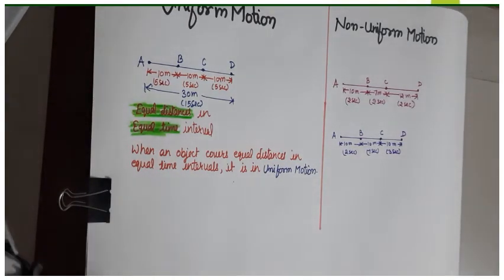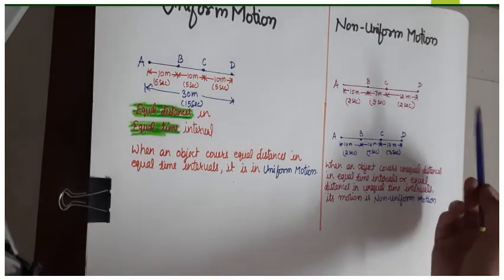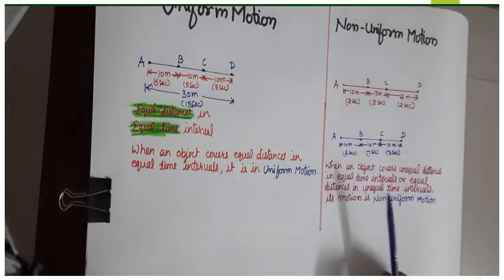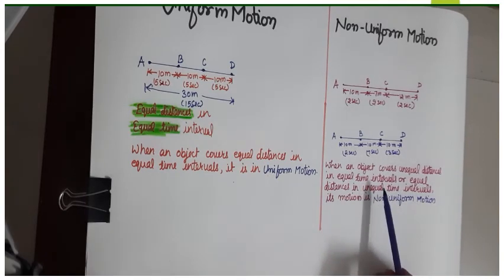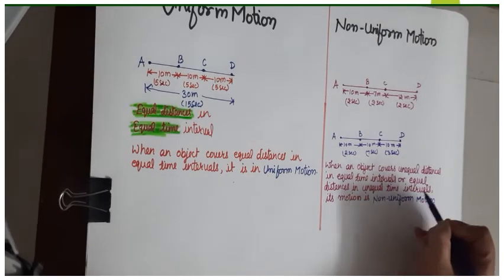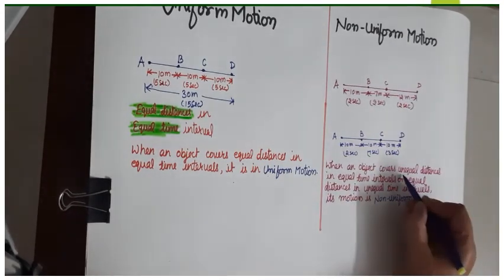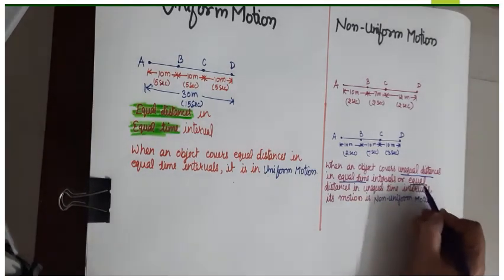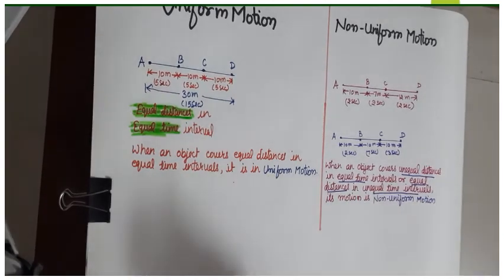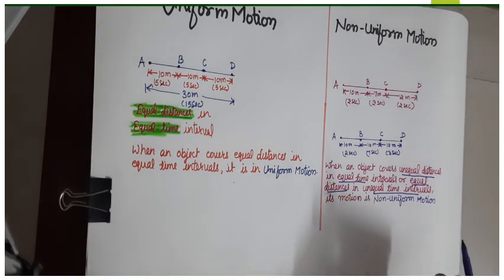In this situation the object is covering equal distances but in unequal time intervals, so this is also an example of non-uniform motion. We can say from the above two examples that when an object covers unequal distances in equal time intervals, or equal distances in unequal time intervals, in both situations the object is said to be in non-uniform motion.